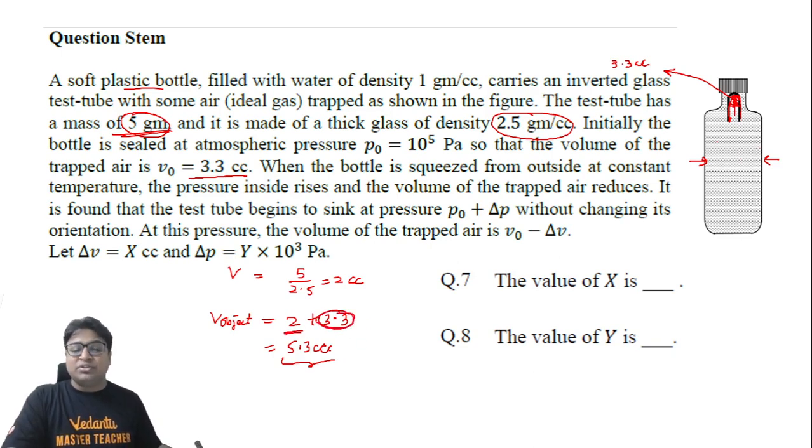So when this volume decreases and becomes equal to 3, at that time the buoyant force becomes exactly equal to the weight of the test tube, and therefore that is the point where this test tube will begin coming down. The normal force between the test tube and the lid will become zero. So the change in volume of air...